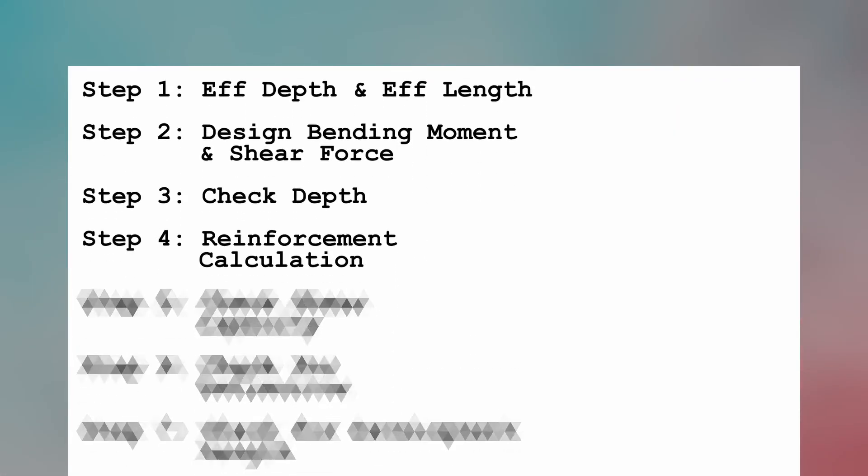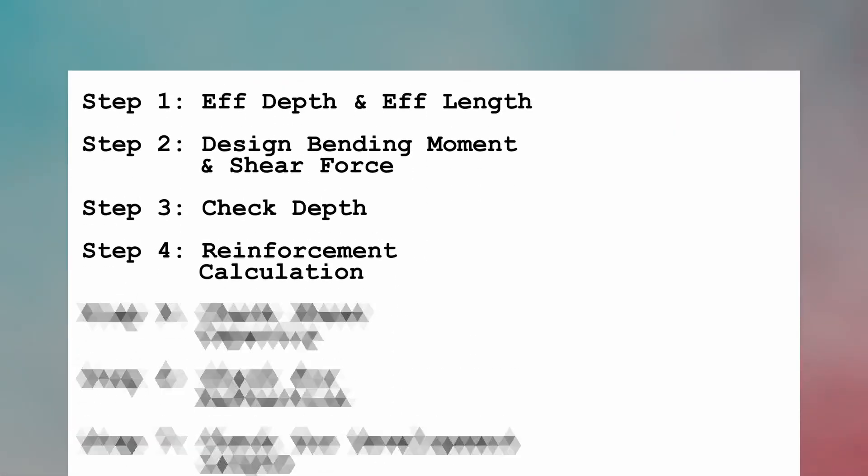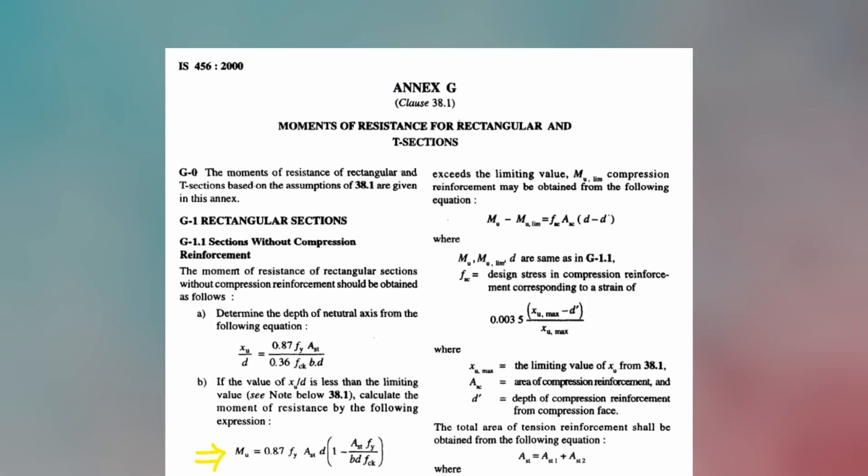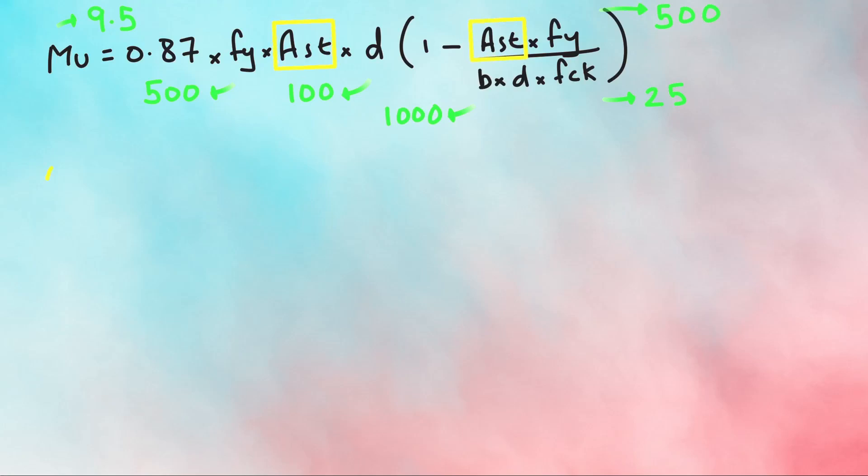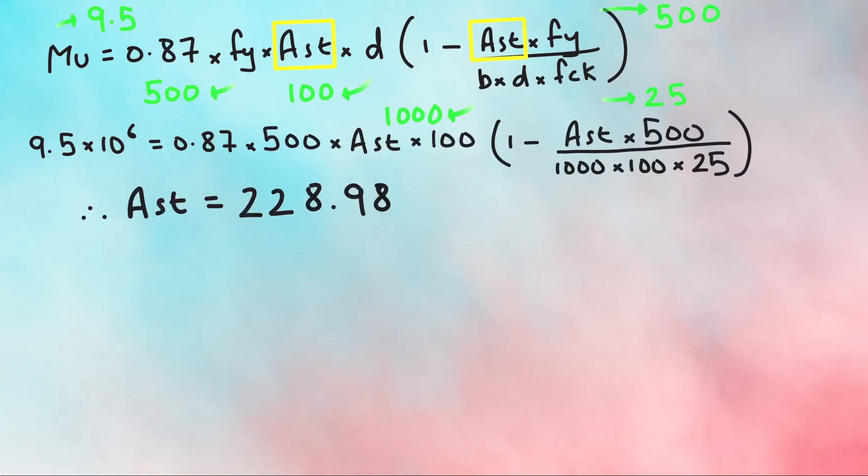Step 4 is reinforcement calculation. As per Annex G clause 1.1B, MU equals 0.87 FY AST D into 1 minus AST FY by B into D into FCK. We have calculated all these values. Only AST is unknown. Substituting the values and solving for AST gives the total steel required as 228.987 mm square. For a unit span of 1 meter, we have to provide 228 mm square of steel.